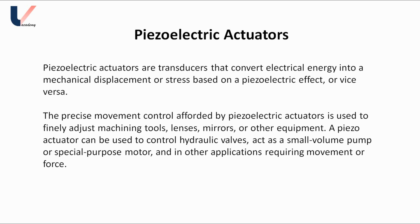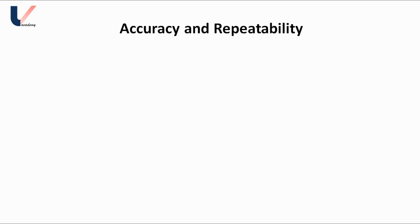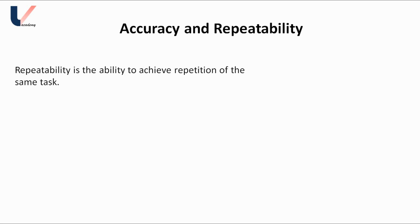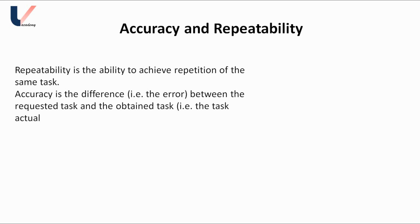The last topic of this lecture is accuracy and repeatability. Students are often confused between these two terms. Repeatability is the ability to achieve repetition of the same task — doing the same task over and over again. Accuracy, on the other hand, is the difference between the requested task and the obtained task — that is, accuracy is hitting your target each time.